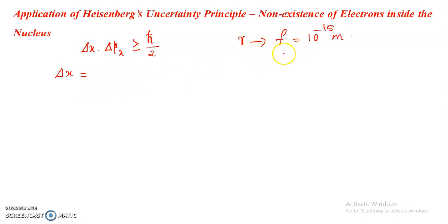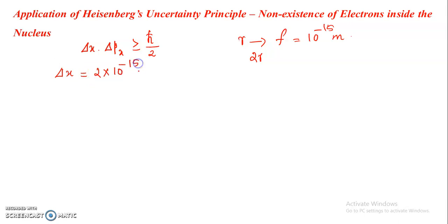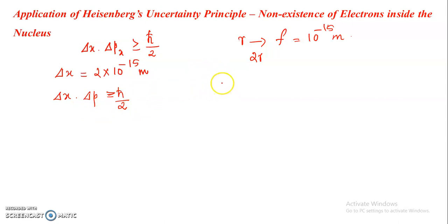Taking the nuclear radius to be 1 Fermi or 10 raised to minus 15 meters, the entire dimension will be the diameter of the nucleus, that is 2r. So the minimum uncertainty in position will be equal to the diameter of the nucleus: delta x equals 2 times 10 raised to minus 15 meters.